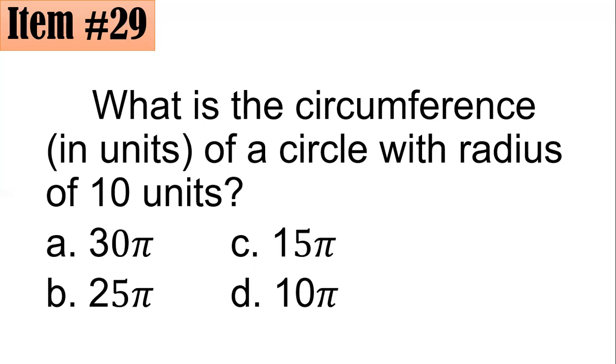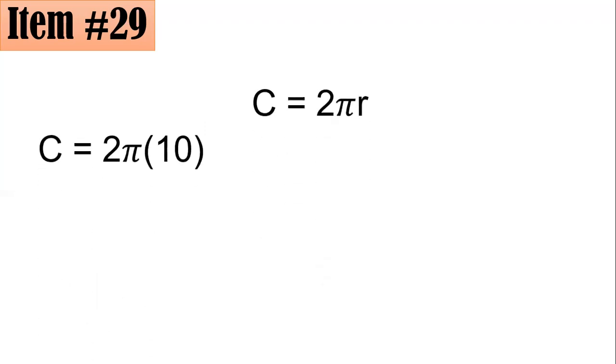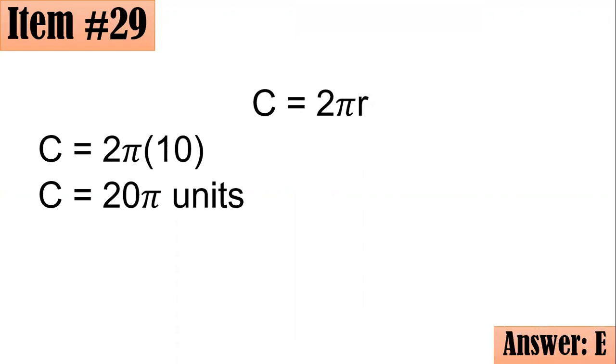So from here, you know that the formula for circumference is 2πr, or 2 times π times the radius. And the radius is 10, so you have 2 times π times 10. 2 times 10 is 20, so the circumference is 20π units. But since 20π is not one of the choices, so we go with letter E based on the instruction that we have.